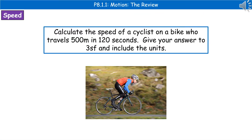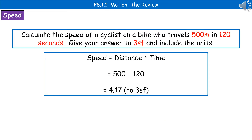An example of the kind of question we could get about motion: calculate the speed of a cyclist who travels 500 metres in 120 seconds — give your answer to three significant figures and include the units. First, highlight or jot down the important information. Then recall the formula: speed = distance ÷ time. Substitute in the values and calculate: 500 ÷ 120 gives an answer of 4.17 metres per second to three significant figures.